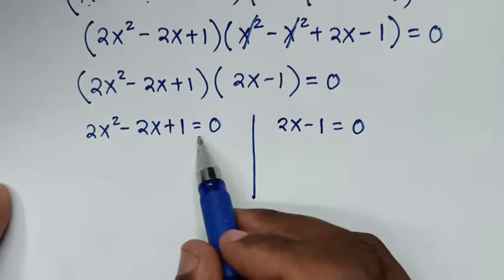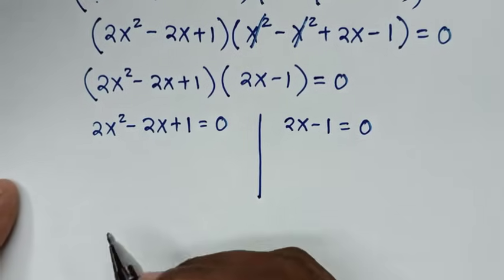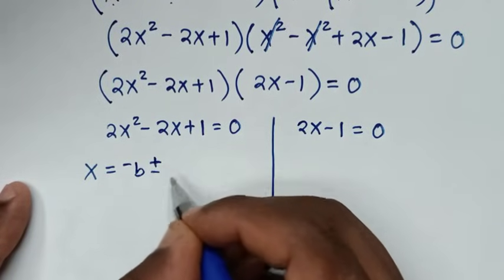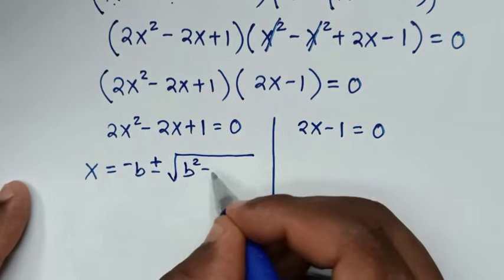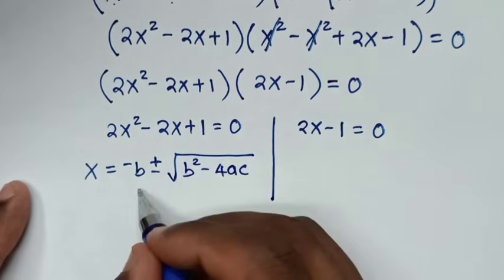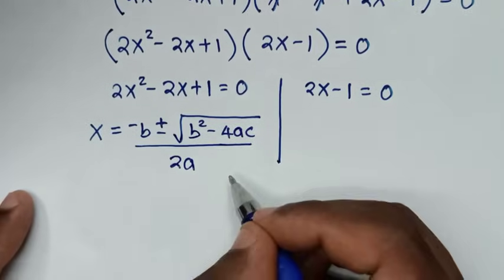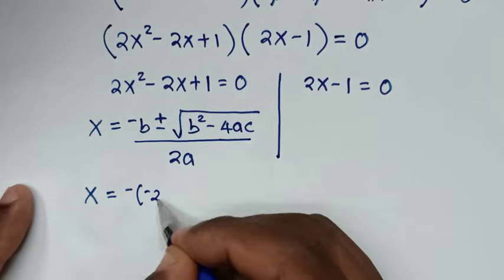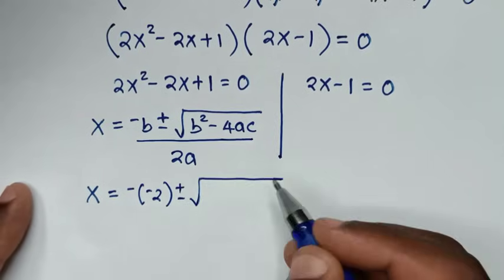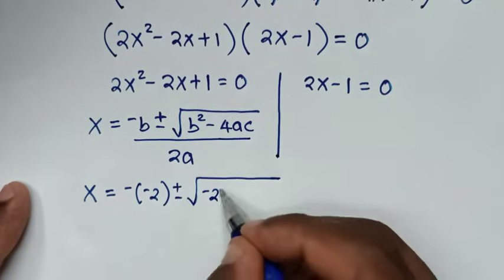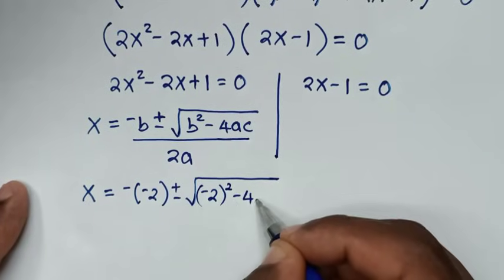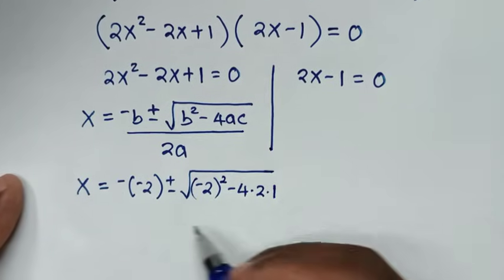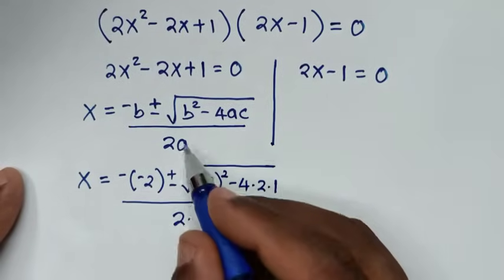To solve the first solution, we use the quadratic formula: x equals negative b plus or minus square root of b squared minus 4ac, over 2a. Here a is 2, b is negative 2, and c is 1. Substituting: x equals negative negative 2, plus or minus square root of negative 2 squared minus 4 times 2 times 1, over 2 times 2.